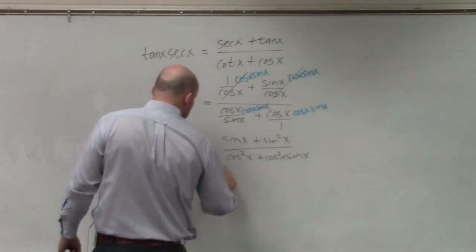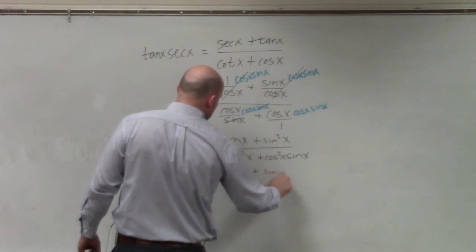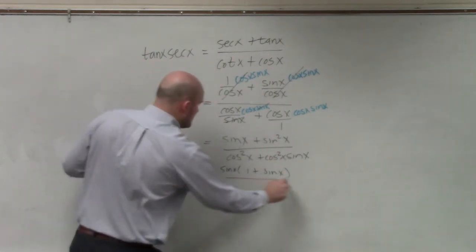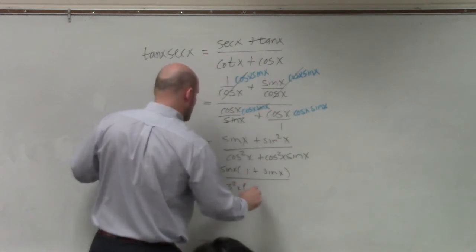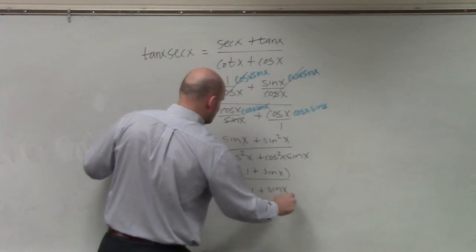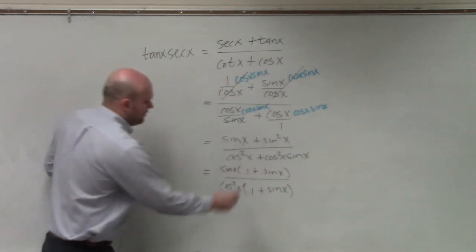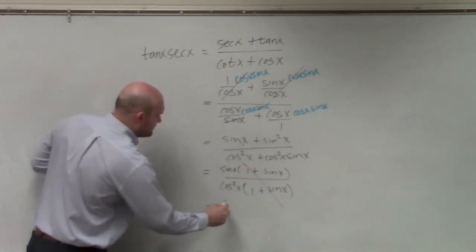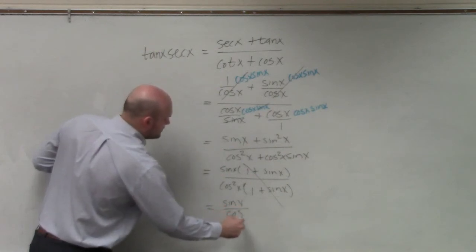In the numerator, I can factor out a sine of x. That gives me 1 plus sine of x. In the denominator, I can factor out a cosine squared. By factoring out a cosine squared of x, I'm left with a 1 plus sine of x. Those divide out, and now I'm left with a sine of x over cosine of x.